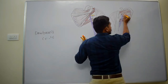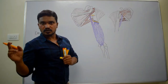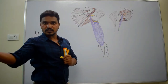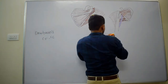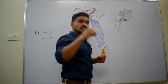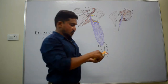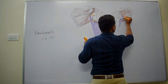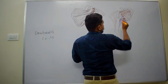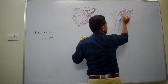This posterior cord of the brachial plexus is giving a branch that supplies to the deltoid muscle. This nerve — the axillary nerve — runs behind the axillary artery. In the lower part of the axilla, the posterior cord of the brachial plexus gives off the axillary nerve.